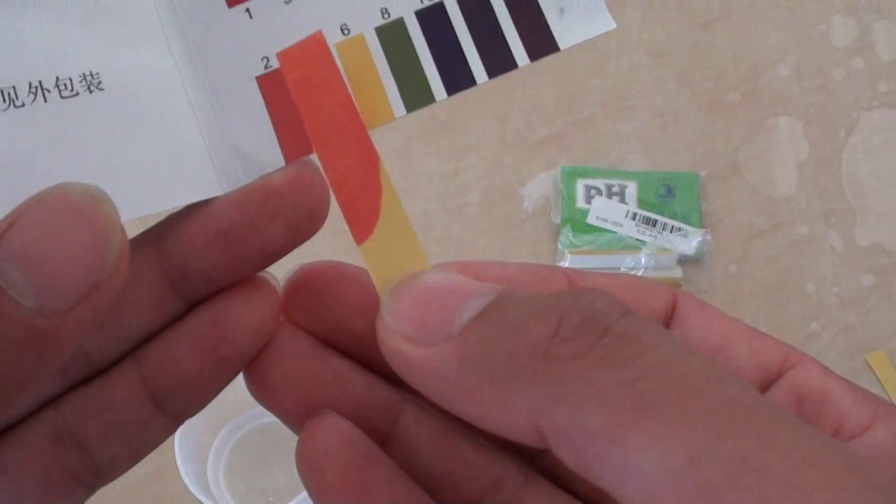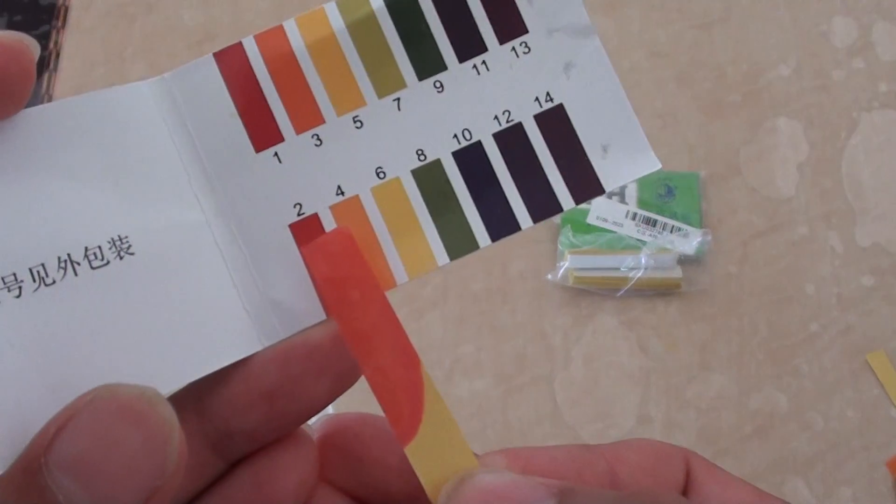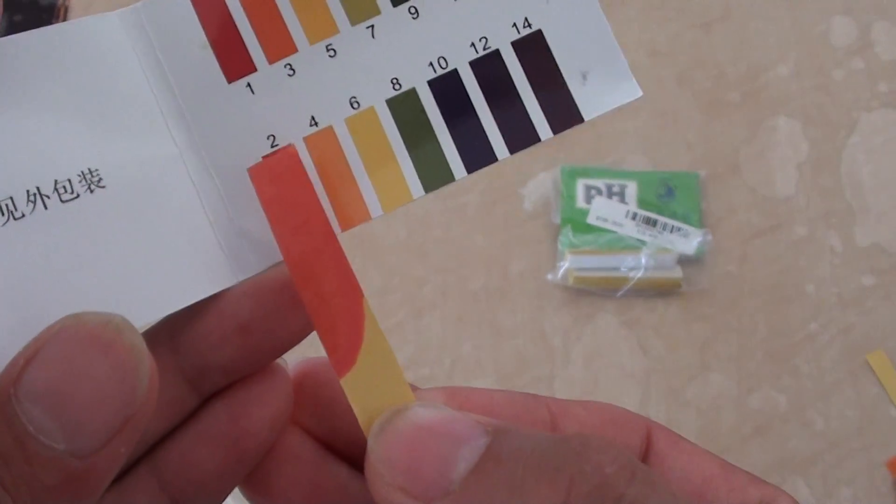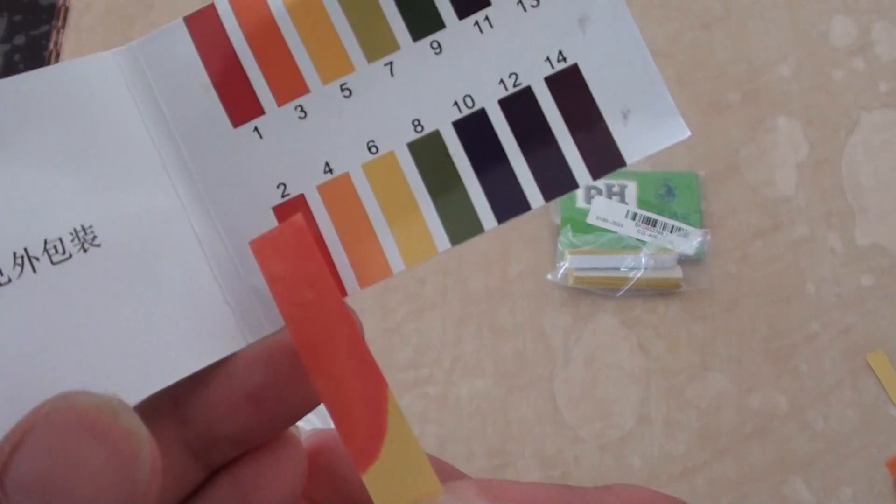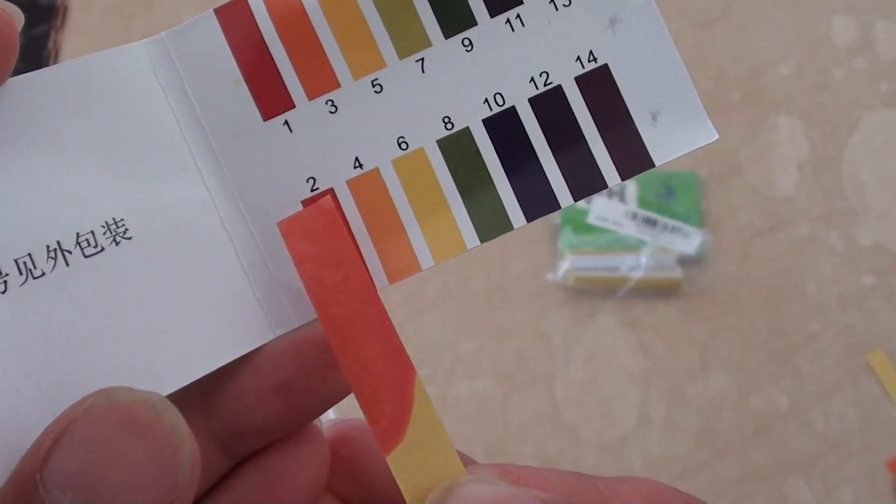So using this piece of paper here, we can align up. And you can see it's matched closely with the 2 or 3. So you can see here, using the lemon, it has a very high level of acidity.